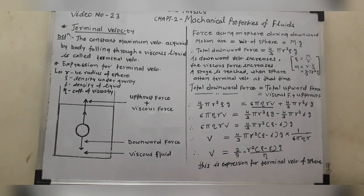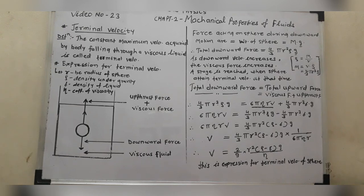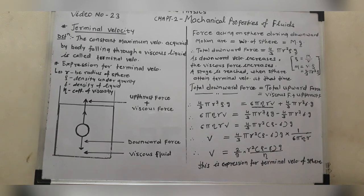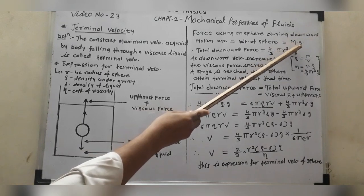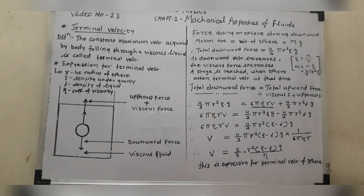As the downward velocity increases, the viscous force also increases. The stage is reached when the sphere attains the terminal velocity, and at that terminal velocity the total downward force is equivalent to the total upward force. The total downward force equals the weight of the sphere, mg, which is equal to (4/3) π r³ ρ g.